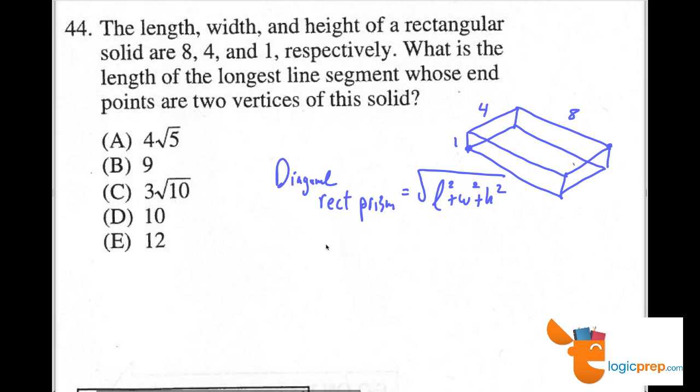So now you can see this is fairly easy. The diagonal here has to equal the square root of 4 squared plus 8 squared plus 1 squared. So the diagonal is going to equal the square root of 16 plus 64 plus 1, which means the diagonal is going to simply equal the square root of 81, which we know to be 9. So that makes B the answer.